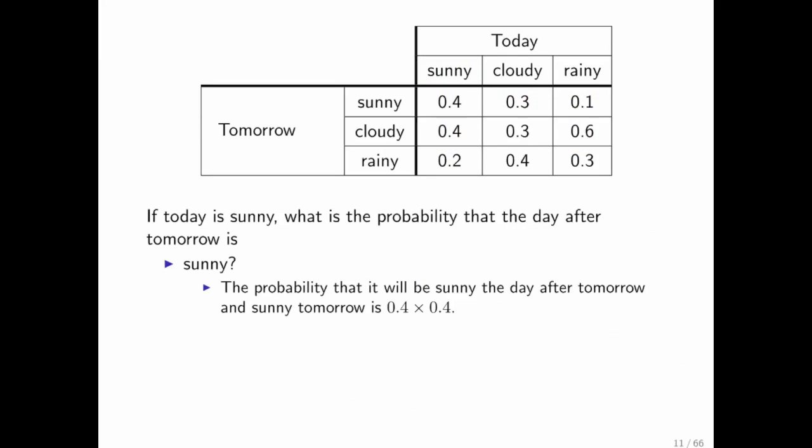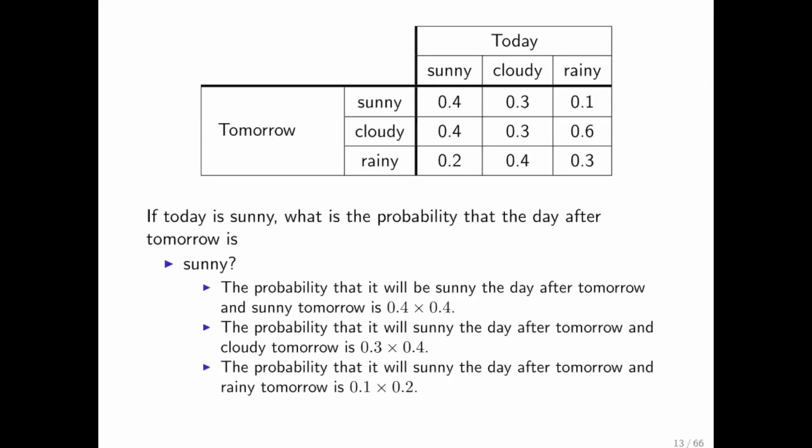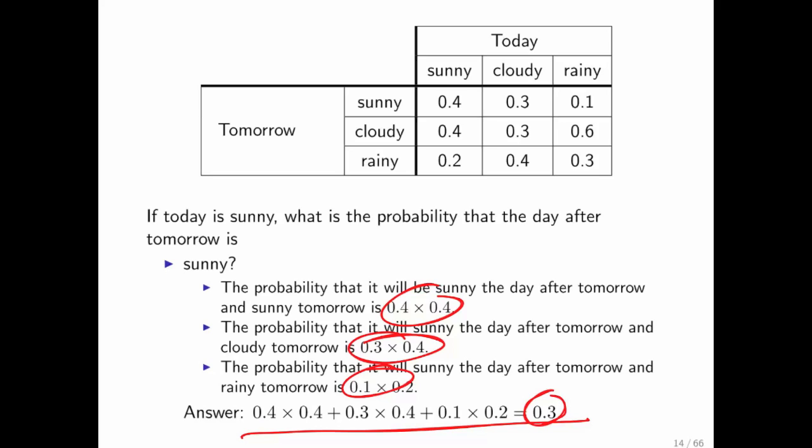We can summarize that by saying that the probability that it's sunny the day after tomorrow and sunny tomorrow is this. So all we need to do is add this to that to that to get that. And bingo, we get our probability of it being sunny the day after tomorrow given that today is sunny.